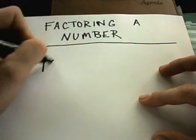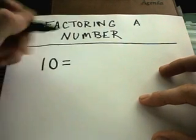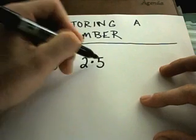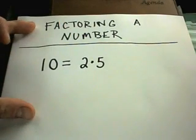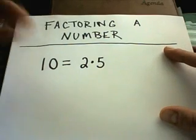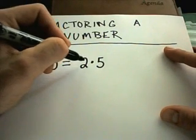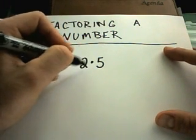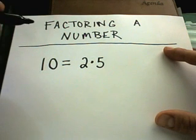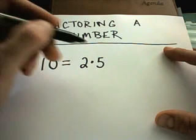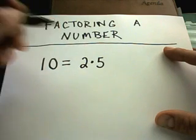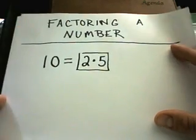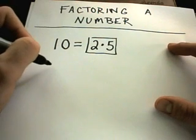Factoring a number, for example 10, means writing it as a product. So I can write 10 as 2 times 5, and we want to use whole numbers when we factor. Notice I can't really break down either number further. I can't write 2 as multiplication of any smaller numbers, only as 2 times 1. Same thing with 5. So this is now considered factored.